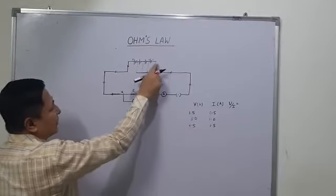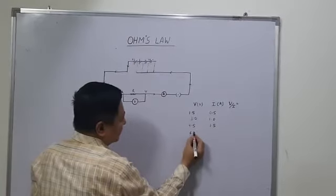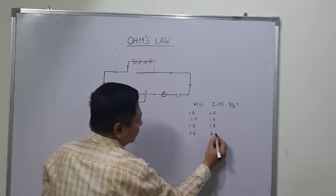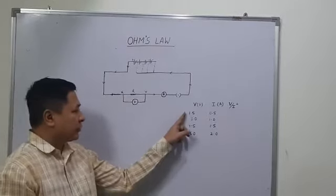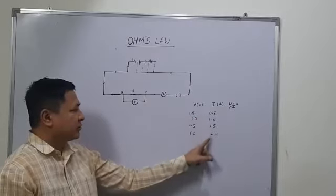And when we connect from here, all 4 cells together, this will be 6 volts and the current will be 2 amperes. Now as you can see, when the potential difference increases, the current also increases.